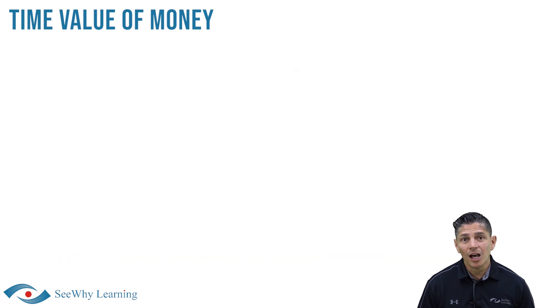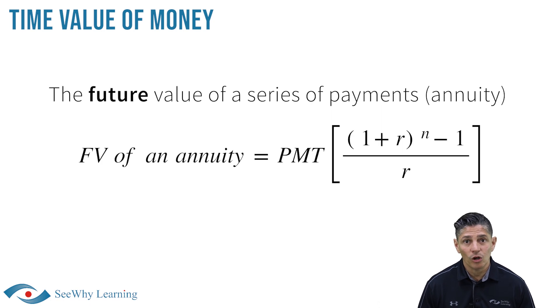However, if you wanted to calculate the future or present value of a series of payments, in other words not a lump sum, you're going to need more involved formulas, referred to as the present value or future value of an annuity. An annuity can simply be defined as a series of payments.